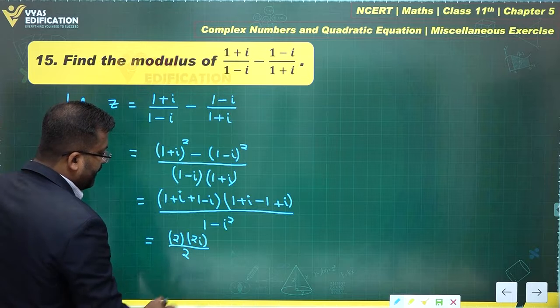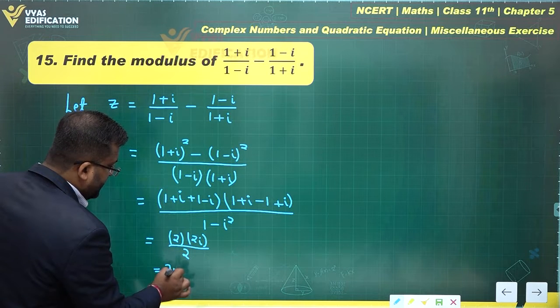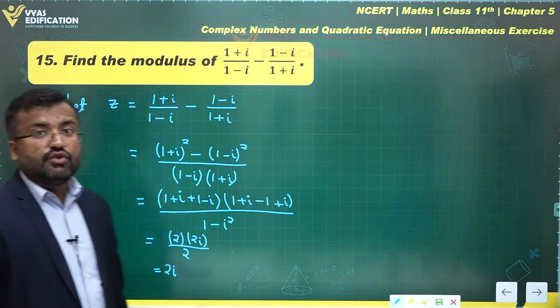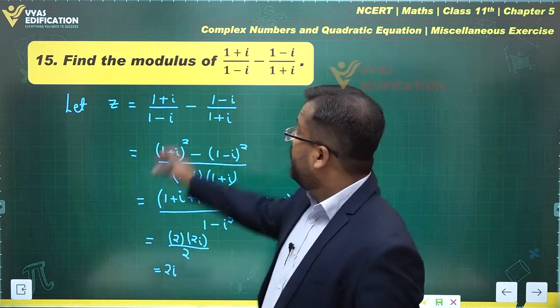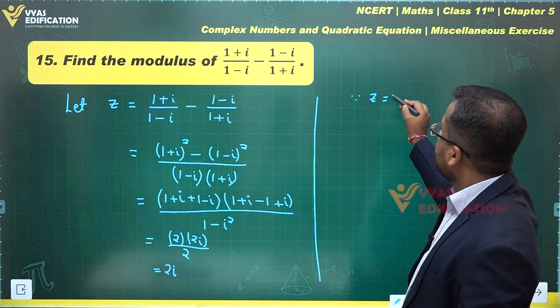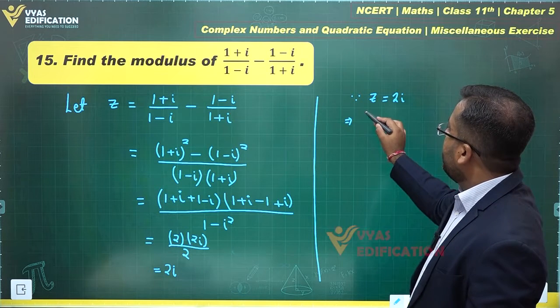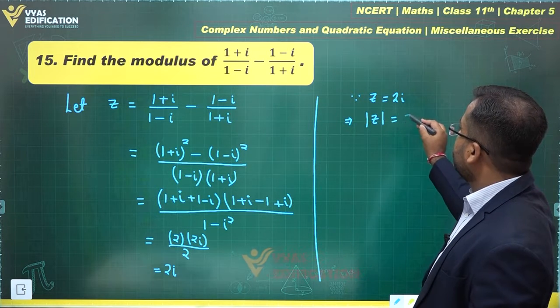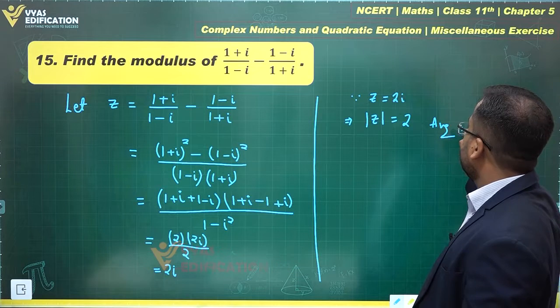This complex number is actually equal to 2i. That complicated expression simplifies to 2i. Since z equals 2i, the modulus of z equals 2, and that is my answer for this question.